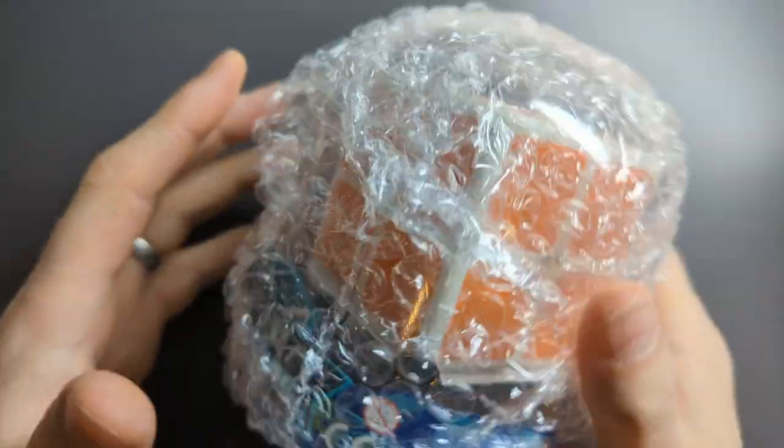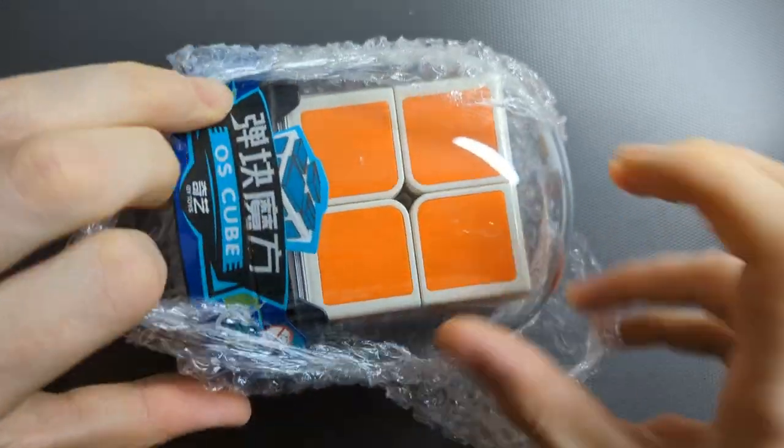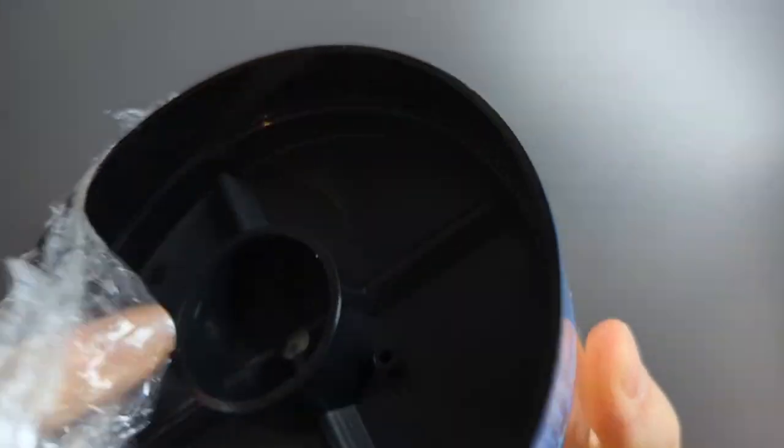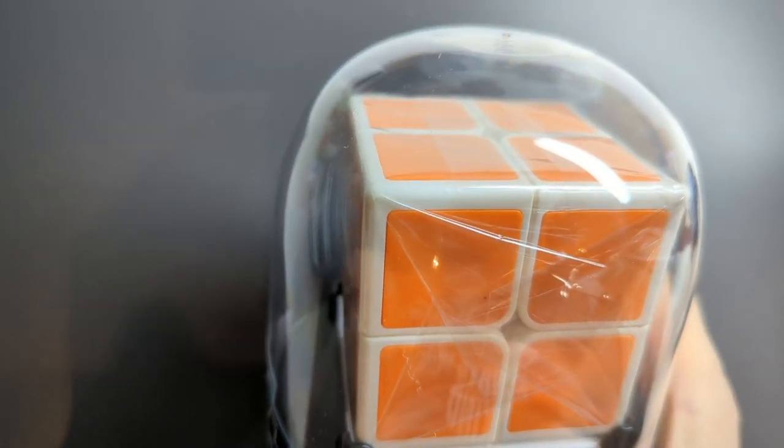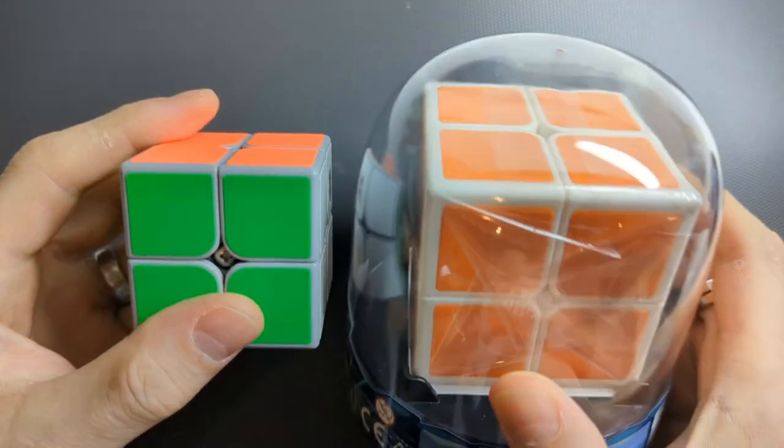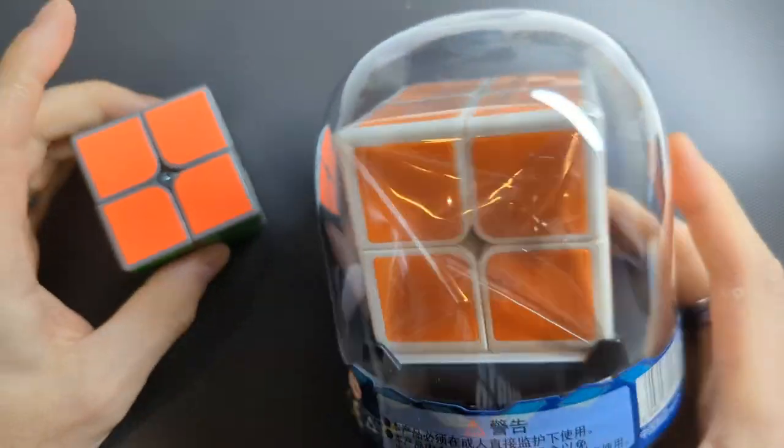So what I have here is the OSCube, and I don't know too much about it. I have an idea of roughly how it works. It looks like a 2x2x2, although it is big. By comparison, here's an actual 2x2x2 next to the OSCube. The OSCube is actually huge.